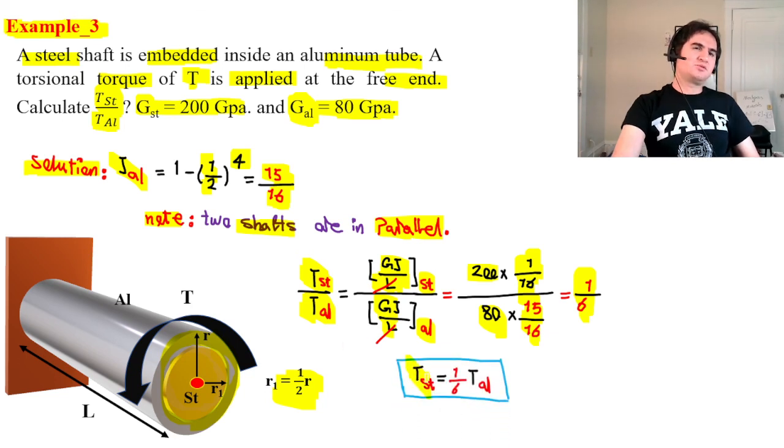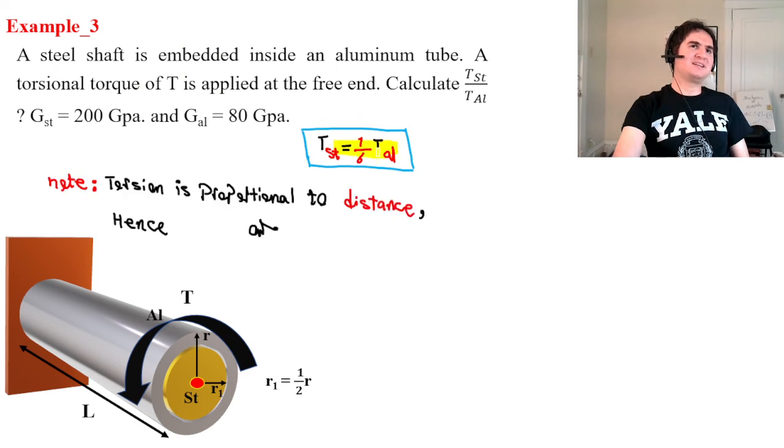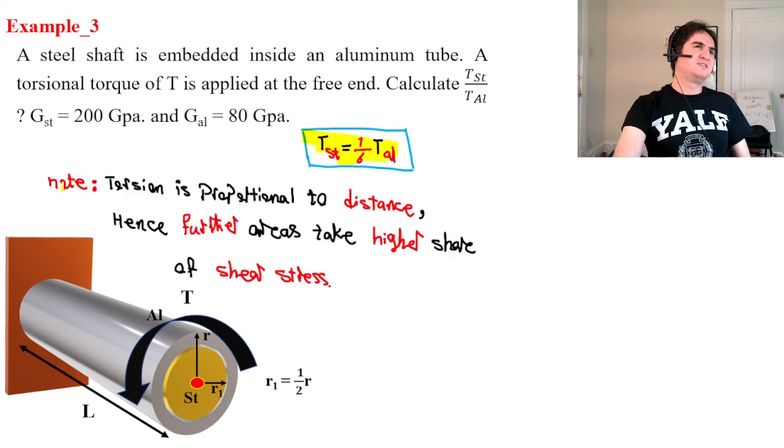And that says torsion of steel, share of torsion of steel is 1 sixth of aluminum. And that's again an interesting fact that they have the same areas, because R1 is equal to half of R2. So again with the same amount of area, torsion is proportional to distance, farther areas. Also, they have the same areas but go by a higher share of shear stress or torsion.